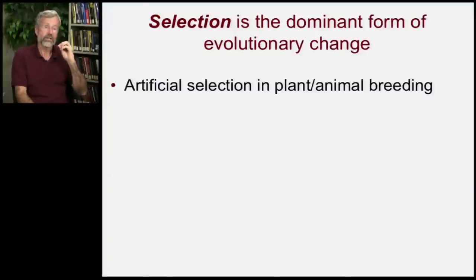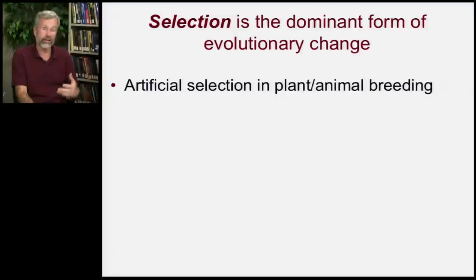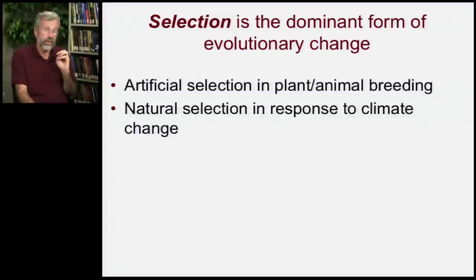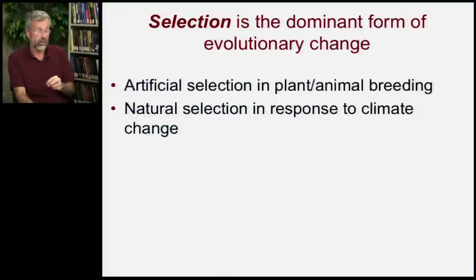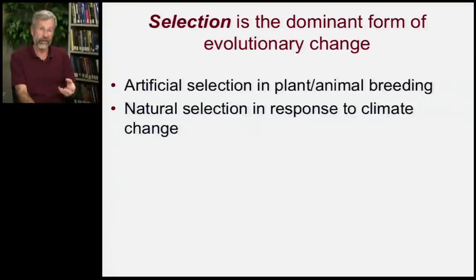We know this because of the facility with which organisms can change from artificial selection. Physical forms are very malleable or plastic through time with selective breeding. Climate change is not yet as bad as it's predicted to be in the coming century, but many organisms are already evolving in response to changes in our climate.